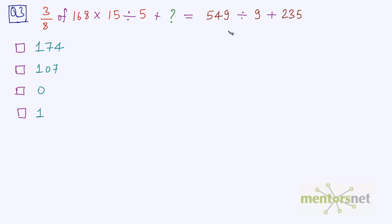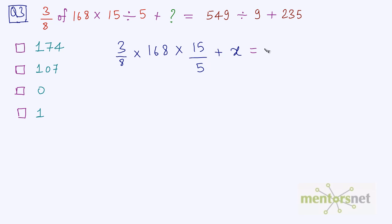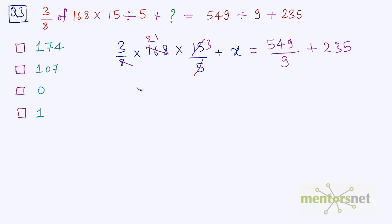On to the third question now. We have this big equation and we have to find the value of the question mark. Let us rewrite the equation. We have 3/8 times 168 times 15 divided by 5 plus x on the left, equal to 549 divided by 9 plus 235 on the right. Let us cancel out terms: 5 ones are 5, 5 threes are 15, and 8 times 21 is 168. So we have 3 times 21 times 3 plus x is equal to 21 plus 235.